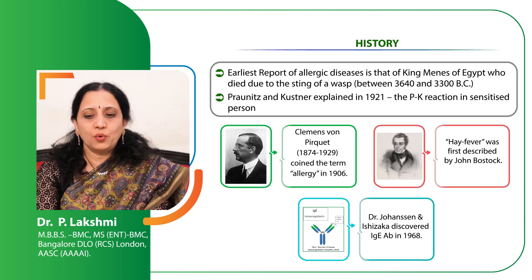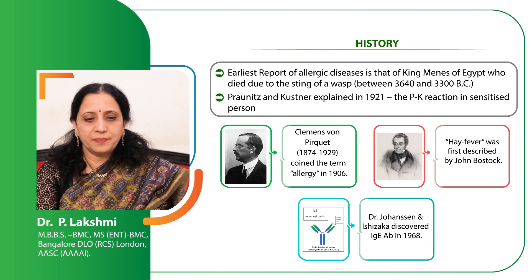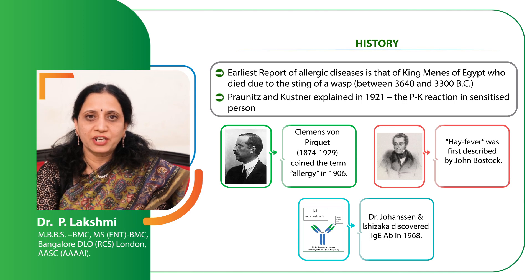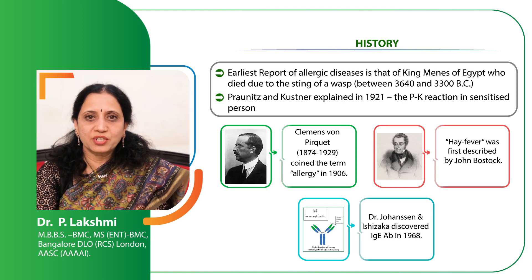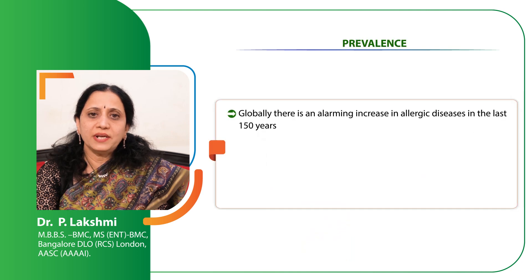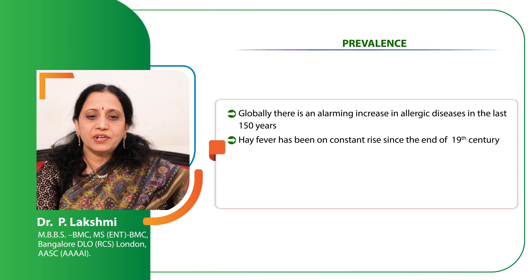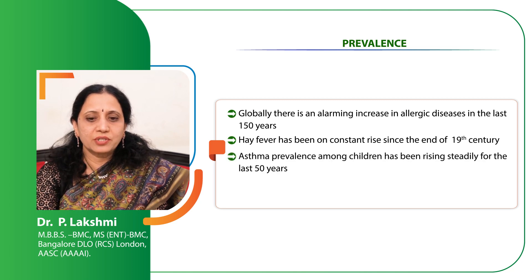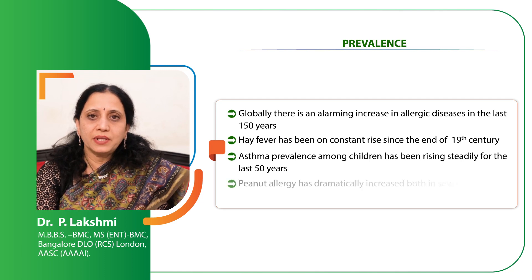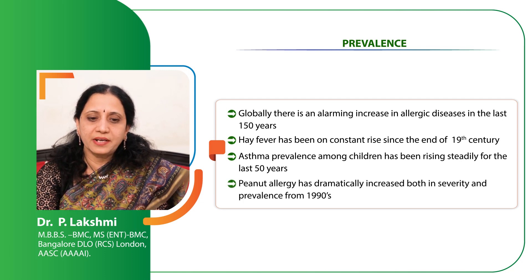Allergy is a very old disease. Way back in 3300 BC, an allergic disease was reported — King Menes of Egypt died due to a severe anaphylactic reaction following a wasp sting. Prausnitz and Küstner explained the famous PK reaction way back in 1921. Globally, there is an alarming increase in allergic diseases in the last 150 years. Hay fever has been on constant rise from the end of the 19th century, asthma prevalence among children has been continuously increasing, and peanut allergy has increased dramatically from the end of the 20th century.